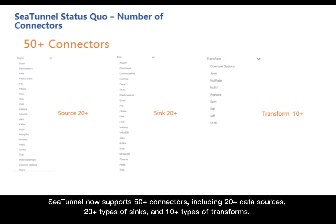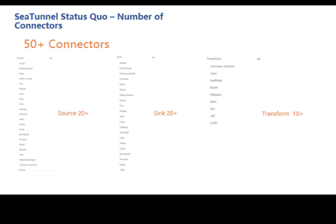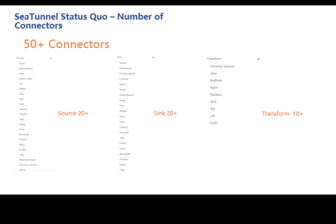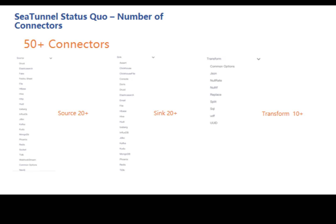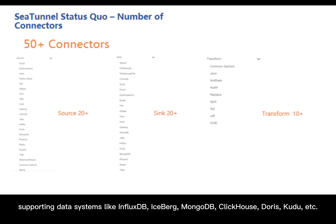C-Tunnel now supports 50-plus connectors, including 20-plus data sources, 20-plus types of syncs, and 10-plus types of transforms. Next year, the number of connectors will be up to 150. The C-Tunnel community is active — we doubled the number of supported connectors this year, adding support for data systems like InfluxDB, Iceberg, MongoDB, ClickHouse, Doris, Kudu, and more.